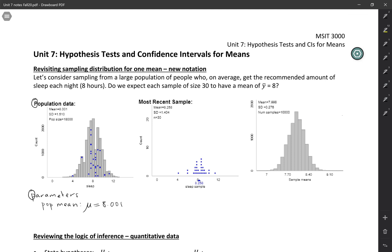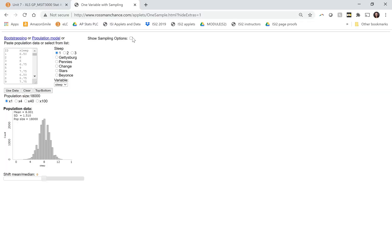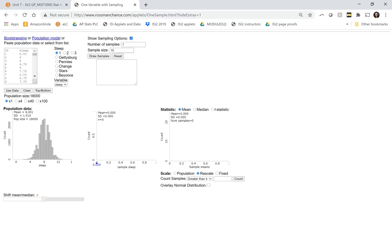And then we also have the population standard deviation. And the symbol that we're going to use for that is a lower case sigma. So the population standard deviation is 1.510. Now using the applet, we're going to take some samples.